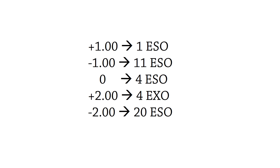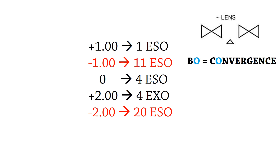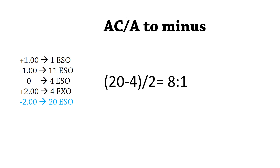So now we've got all this information, but what does it mean? The pattern is: when we introduce plus lenses, it reduces the esophoria. This makes sense because plus lenses are base-in — they reduce the amount of accommodation we have to do, they relax the eyes, so we're doing less convergence because they simulate divergence. When we introduce minus lenses, the opposite applies — it increases the esophoria, because base-out lenses stimulate convergence.